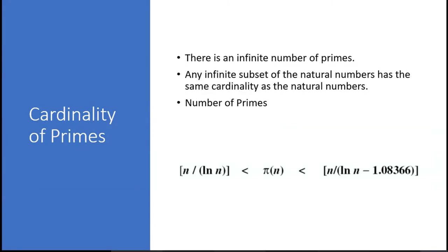The cardinality of prime numbers — that is, how many prime numbers exist — the answer is infinite. Theoretically, there is an infinite number of integers, and prime numbers are basically a subset of those natural numbers. A subset of an infinite set is also infinite. So there is an infinite number of primes.